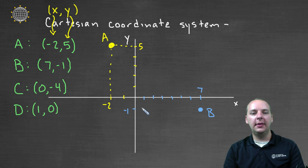For C, the x is zero, and the y is negative four. So we'll go negative one, negative two, negative three. Here's negative four. But the x was zero, so we don't go left or right any. We're right here on the y axis. So there's C.